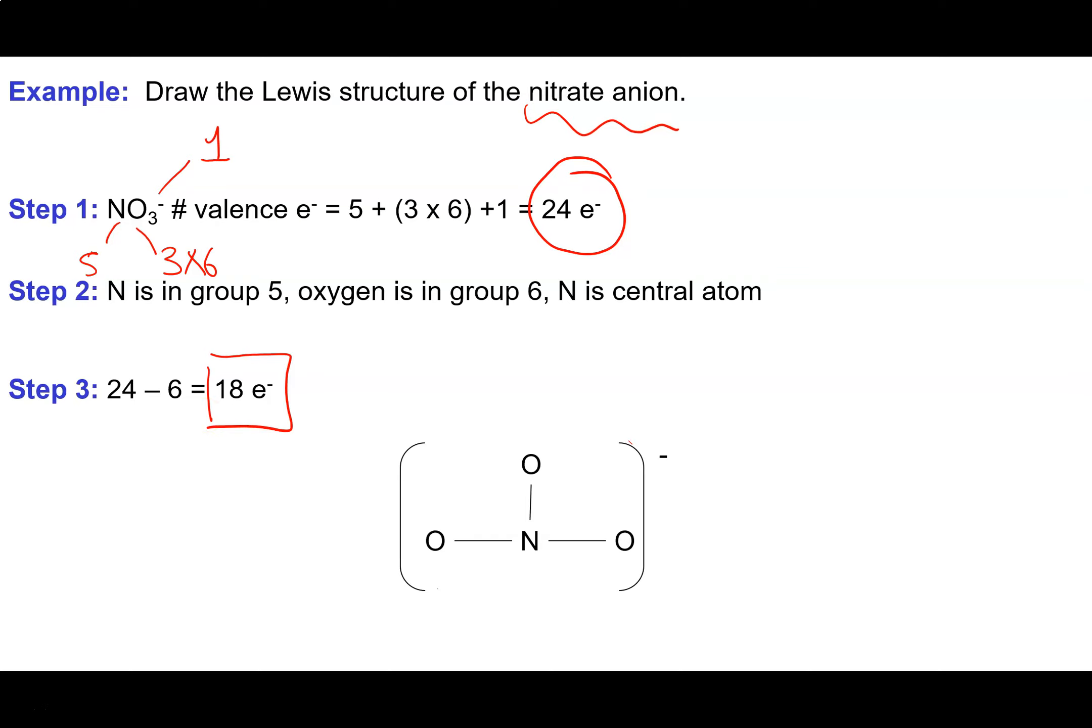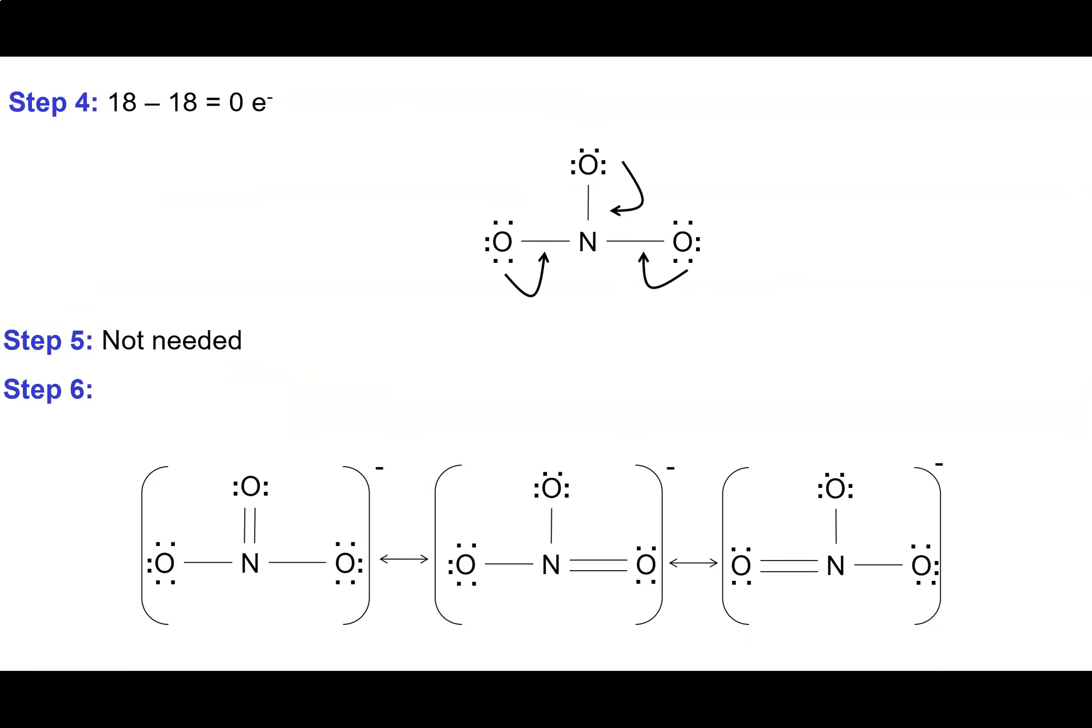In step four, I start finishing the octet on my outer atoms. I add six electrons to each of these oxygens to give them a full octet. Six times three is 18, so that uses up all of my electrons. In step five, if I had any electrons left over, I would have put them on the central atom. I don't, so that's not needed.